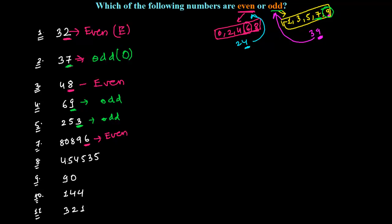And now you have 454535. So it's one of the biggest numbers. See the last digit. This 5 is an odd number. So I'm putting here odd.